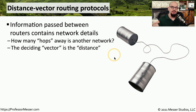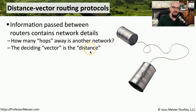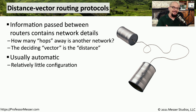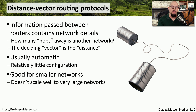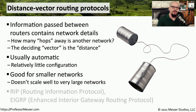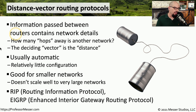Some routing protocols determine what the best route might be based on how far away a particular connection is. These are called distance vector routing protocols, because the information between the routers determines how many hops or routers away another network might be. If a link between two locations has a shorter distance — meaning a smaller number of hops — then that is the vector that will be used to send that traffic. The process for configuring a distance vector routing protocol is relatively simple; on most routers you simply enable the protocol and it takes it from there. This is a very good protocol for smaller networks, but they don't tend to scale well when you have hundreds or even thousands of routers to manage. Good examples include RIP, the Routing Information Protocol, and EIGRP — the Enhanced Interior Gateway Routing Protocol — which is very common to Cisco devices.